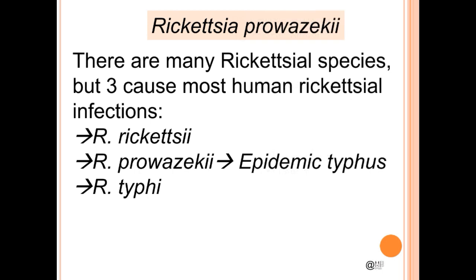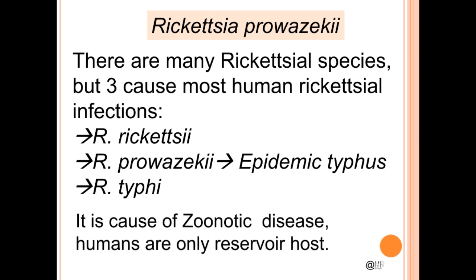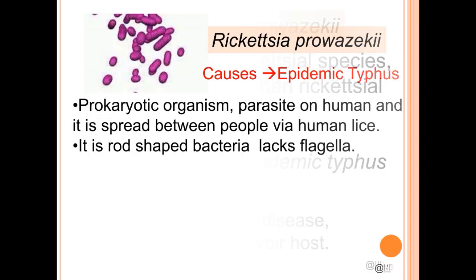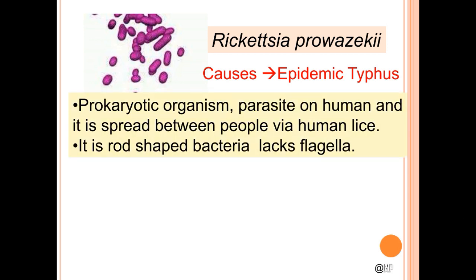Rickettsia prowazekii: there are many rickettsia species but three of them are very important. The second is Rickettsia prowazekii, which causes epidemic typhus, and the third is Rickettsia typhi. It is a cause of zoonotic disease and humans are the only reservoir host. Rickettsia prowazekii causes epidemic typhus. It is a prokaryotic organism, a parasite on humans, and is spread between people via human lice. It is rod-shaped bacteria that lacks flagella.